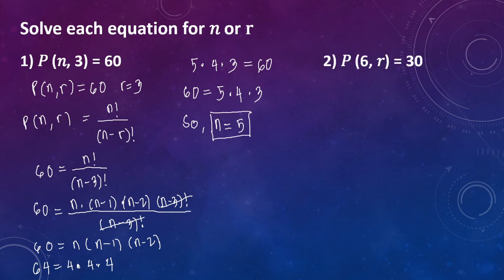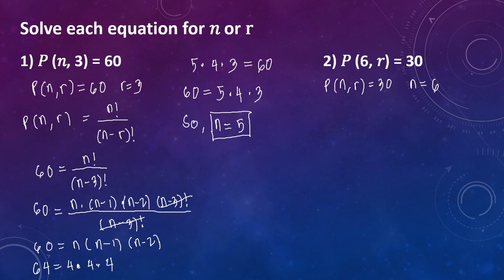Number 2: permutation of 6 taken r at a time equals 30. So dito, yung ating given naman is yung P of n taken r at a time is equal to 30. Yung ating r is ang ating hahanapin. Yung n natin dito ay 6.